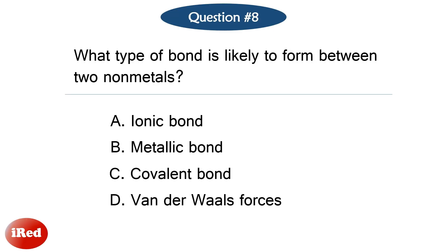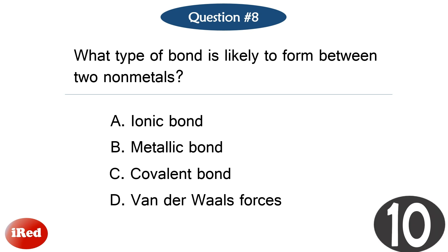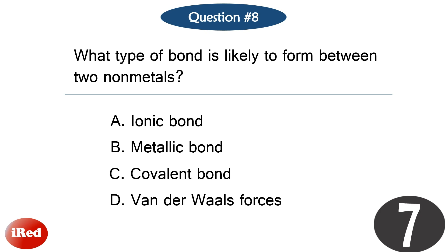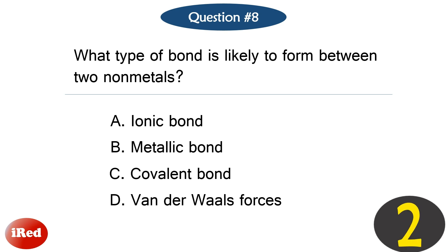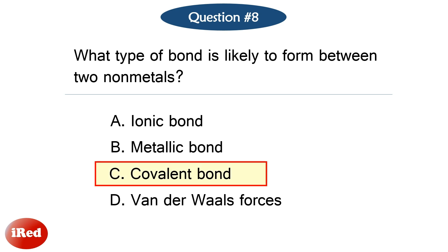Question number 8. What type of bond is likely to form between two non-metals? The correct answer is letter C, covalent bond.